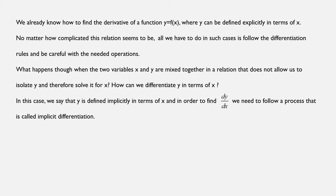What happens, though, when the two variables x and y are mixed together in a relation that does not allow us to isolate y — and therefore solve it for x — how can we differentiate y in terms of x? In this case, we say that y is defined implicitly in terms of x, and in order to find dy over dx, we need to follow a process called implicit differentiation.